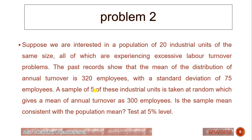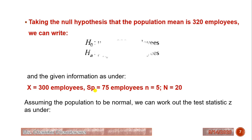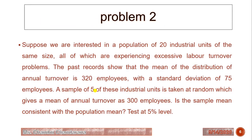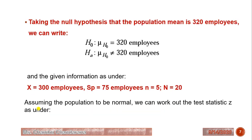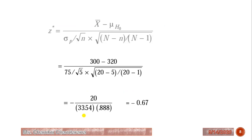The null hypothesis is that the population mean equals 320 employees. From the problem: population size N is 20, population mean is 320, sample mean x-bar is 300, population standard deviation is 75, and sample size n is 5. Since both small n and capital N are given, we apply the second formula — the finite population formula.